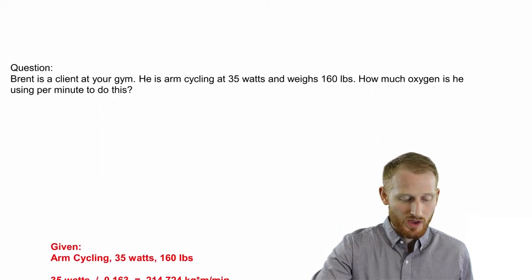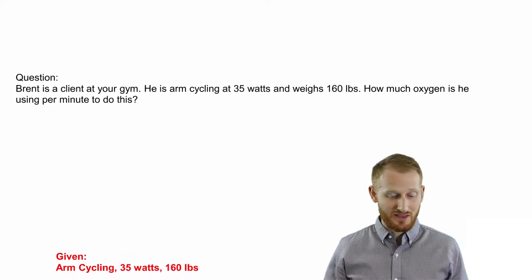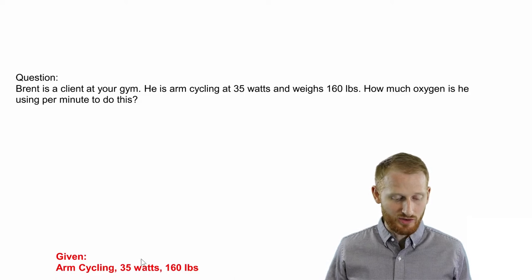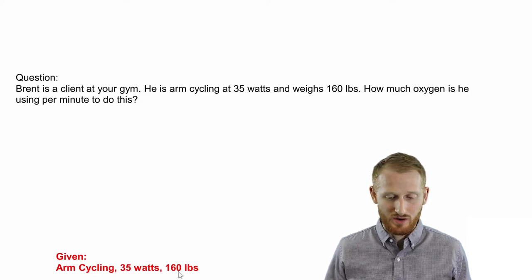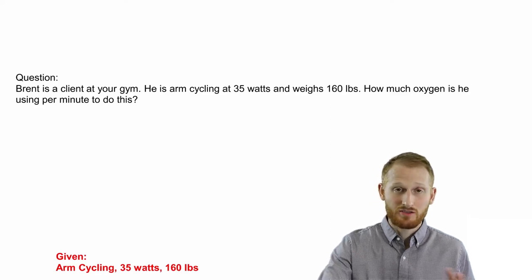So we have a number of given variables here. The first one being that he is arm cycling, so we know the exercise modality. It's very important. We also know the resistance, which is 35 watts, and we know his weight or his body mass to be 160 pounds.